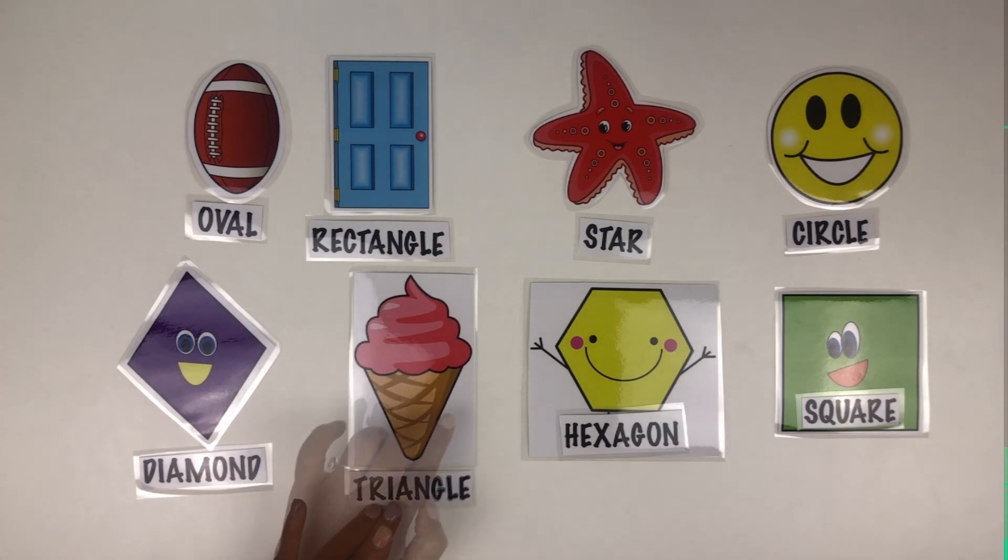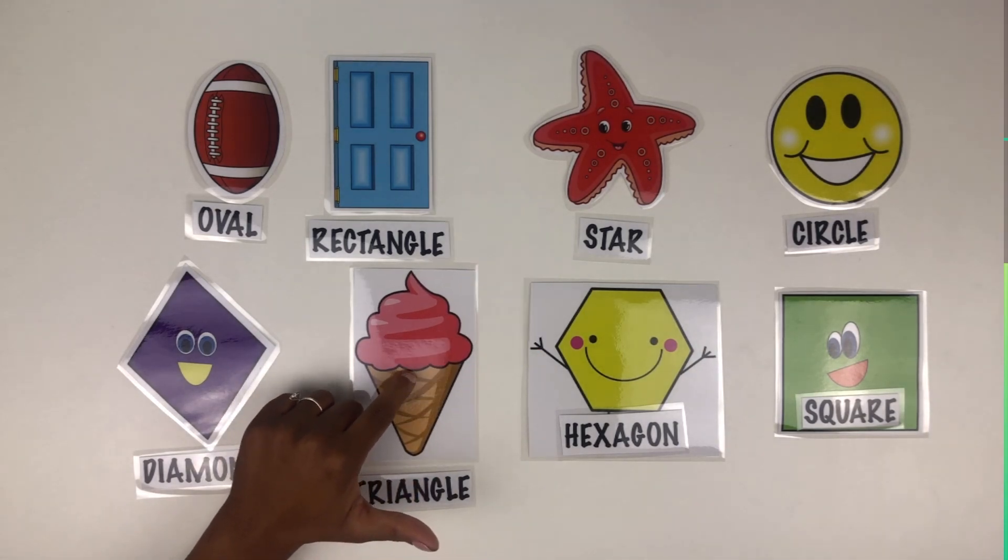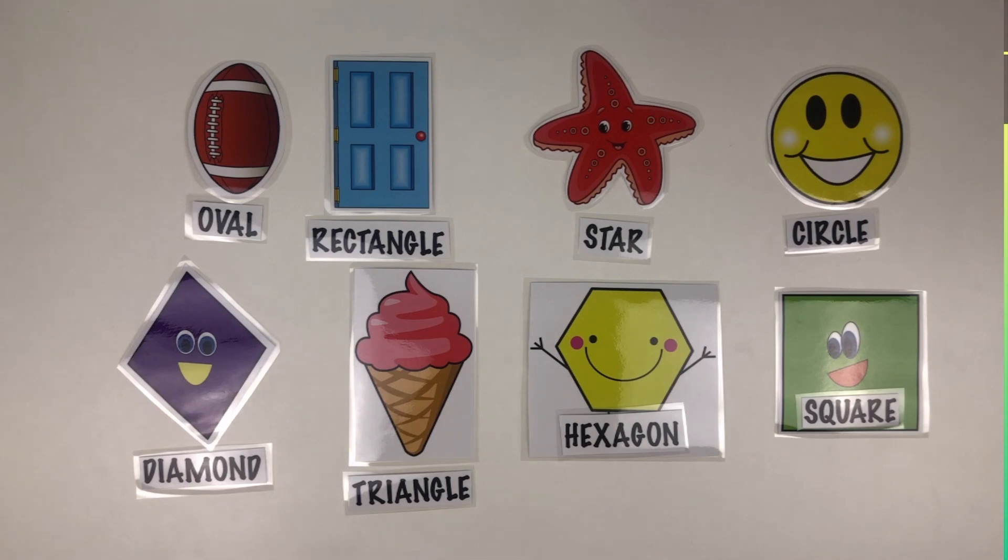How about a triangle? That ice cream cone looks yummy. A triangle has one, two, three, four... three sides. Good. So a triangle has three sides.